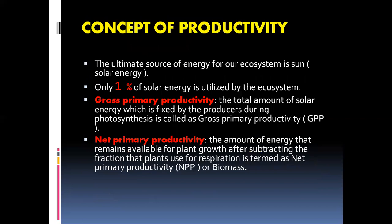There is another important concept related to the ecosystem: productivity. The ultimate source of energy for our ecosystem is the sun or solar energy. Only 1% of solar energy reaching Earth is utilized by the ecosystem. The total amount of solar energy fixed by the producers during photosynthesis is called gross primary productivity, or GPP — G for gross, P for primary, and P for productivity.